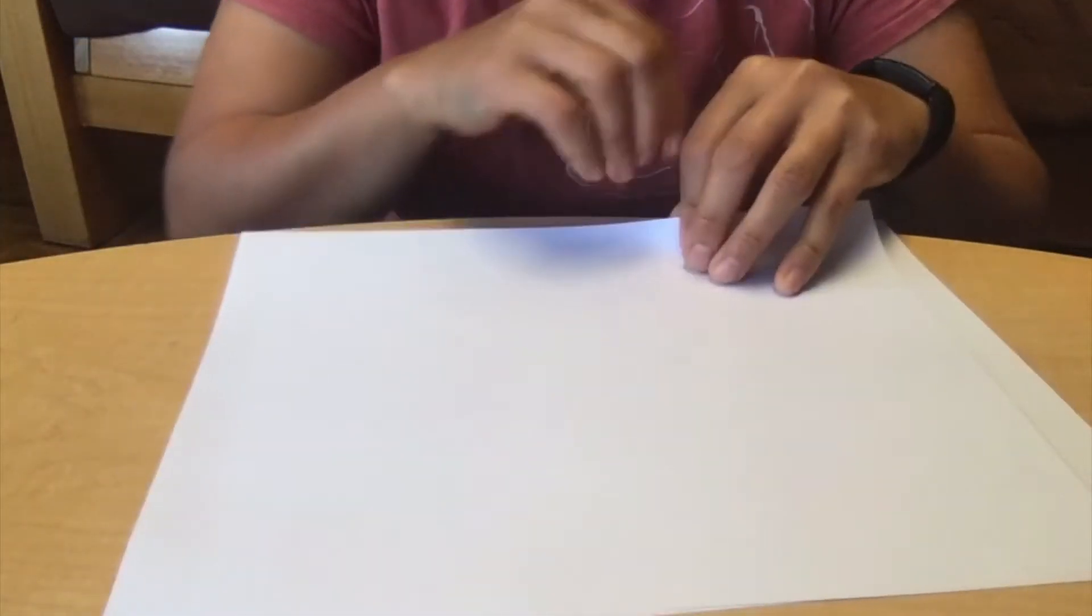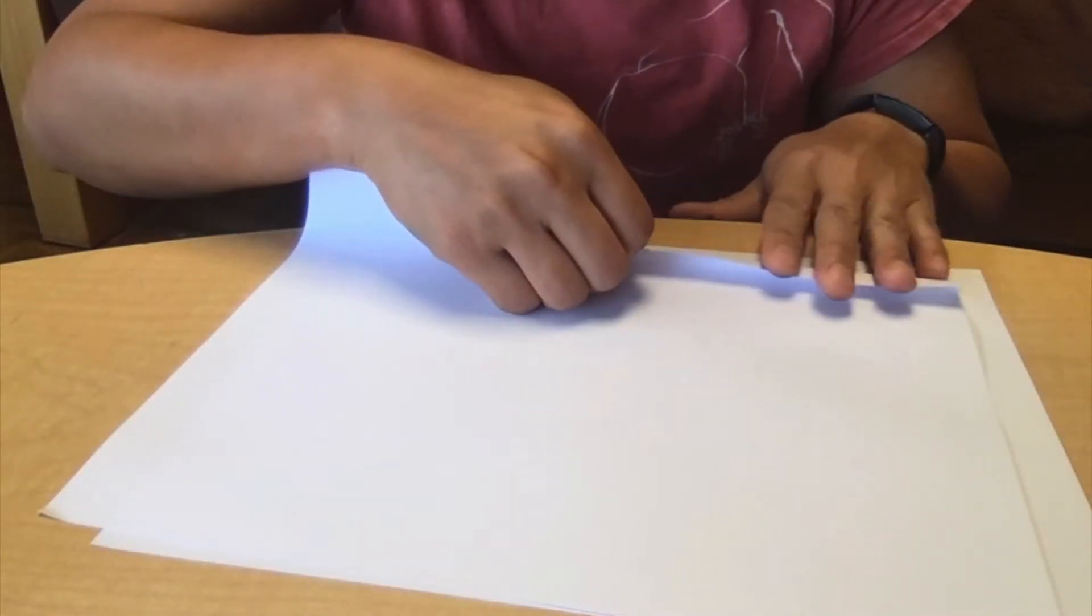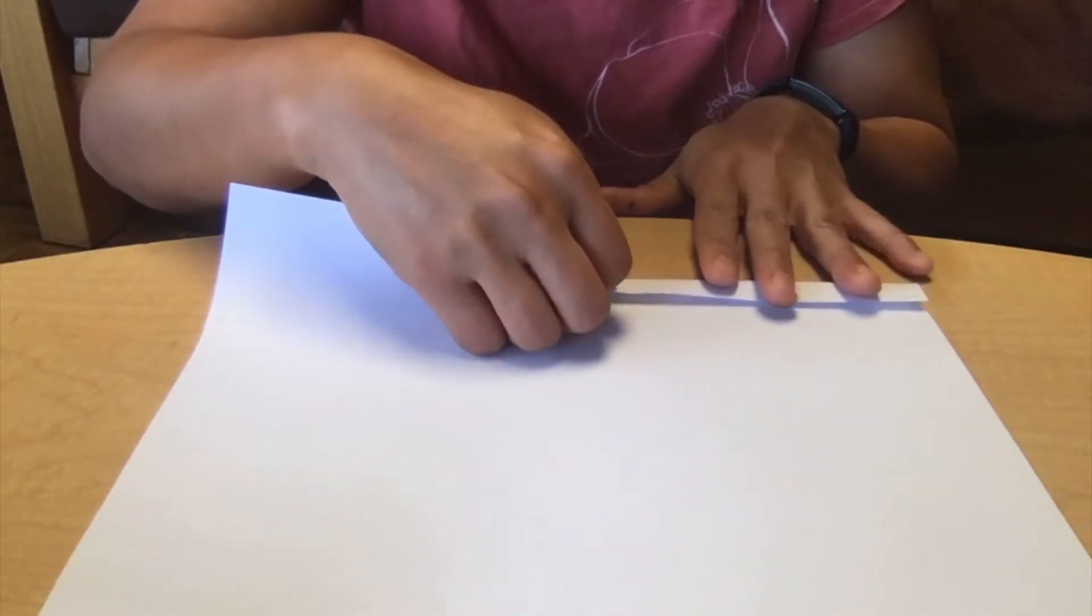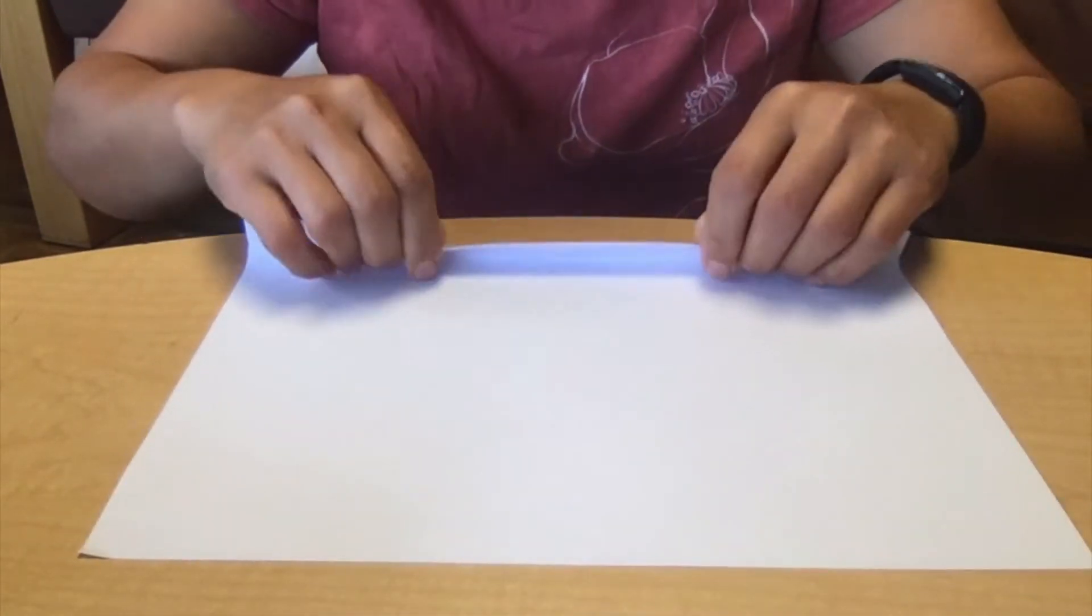So what you're going to need are two pieces of paper, and we're going to be folding them along the long side, so horizontally. You're going to start off by folding one sheet of paper all the way from one end to the other. So we're just going to fold a little bit on the top, and then we're going to continue folding.